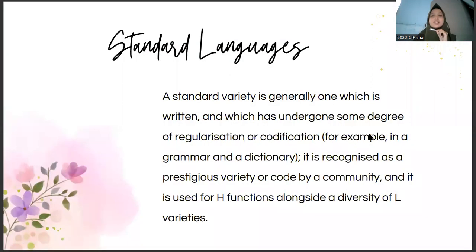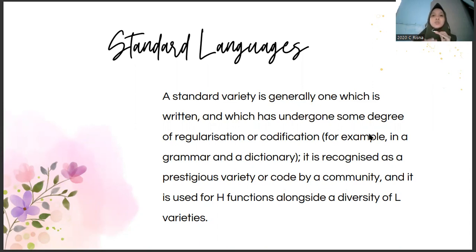The second material is about standard languages. A standard variety is generally one which is written and which has undergone some degree of regularisation or codification, for example, in a grammar and also a dictionary. It is recognized as a prestigious variety or code by a community. And it is used for each function alongside a diversity of other varieties. Standard varieties are codified varieties. Codification is usually achieved through grammars and also dictionaries which record and sometimes prescribe the standard forms of the language.